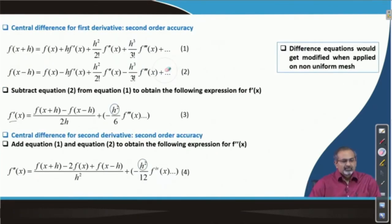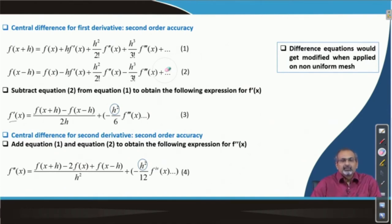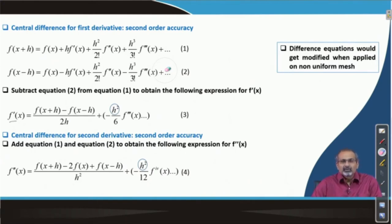Let us now look at how we use equations 1 and 2 to derive an expression for the first order derivative, but now going for higher accuracy. The forward and backward differencing used earlier gave us only first order accuracy. This time we are going to manipulate equations 1 and 2 in such a manner that we get an expression for the first order derivative with second order accuracy.